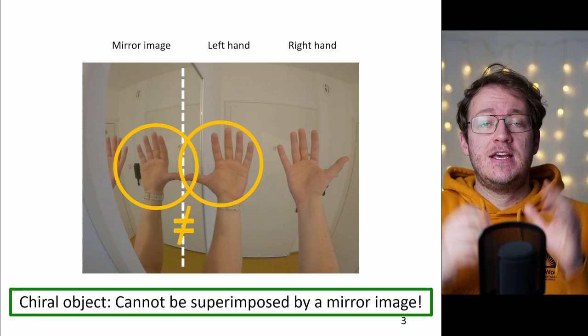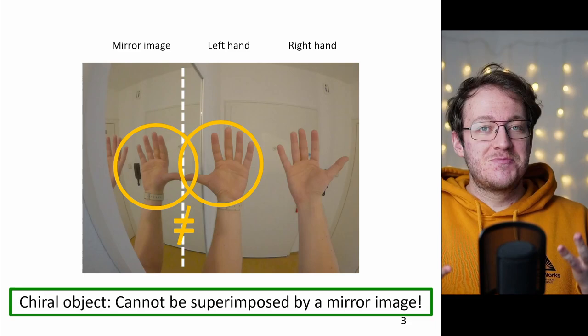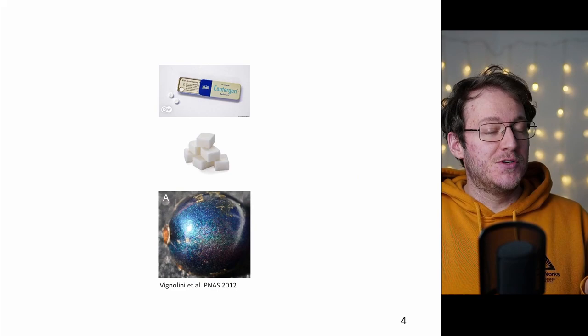So let's start with what is chirality. Here you can see an image of my two hands and as well as a mirror image of my left hand. If you look closely at the mirror image and my left hand you can see there's no way you can overlap the two of them. And this brings us to the definition of a chiral object. Whenever the object and its mirror object cannot be superimposed with each other it is said to be chiral.